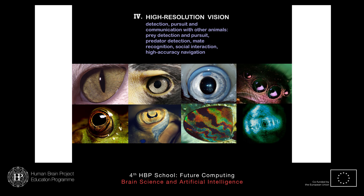Now let's go to high-resolution eyes. Animals that have high-resolution vision are: vertebrates — fish, amphibians, reptiles, birds, and mammals including us; arthropods — insects, crustaceans, and spiders; and cephalopods — octopus, squid, and cuttlefish, which have large camera-type eyes. Those three groups of animals are the only ones that actually have high-resolution vision and brains that can detect other animals. All other animals see only blurred images of their surroundings to move them to the right place.